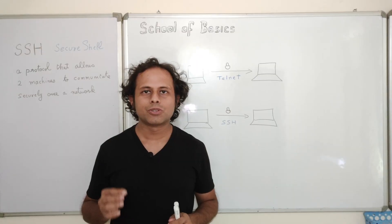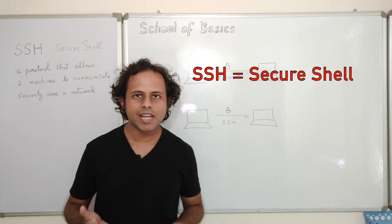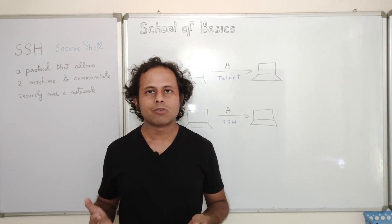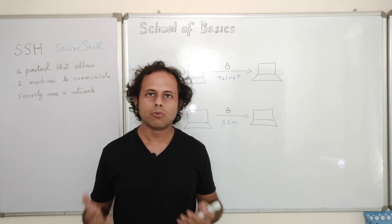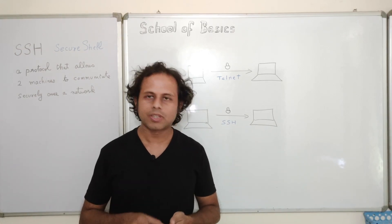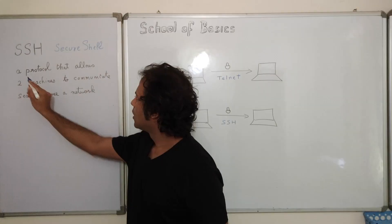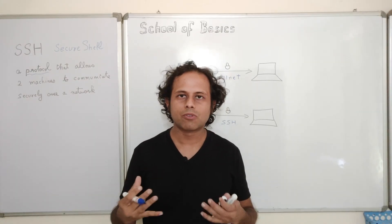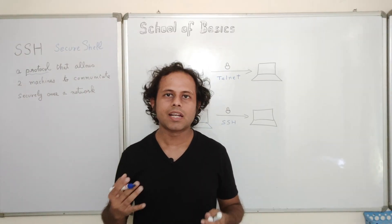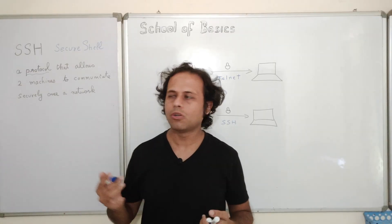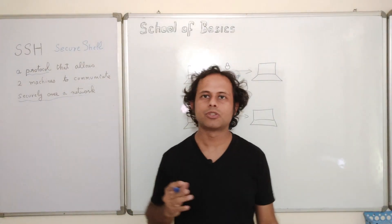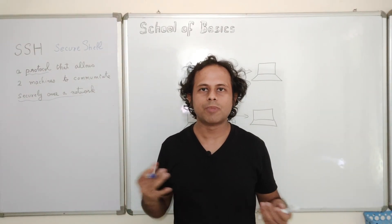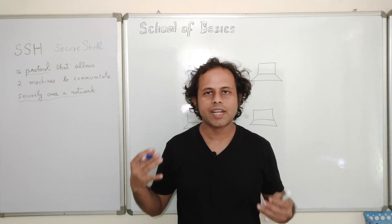SSH is an acronym for Secure Shell. In very simple words, it is a protocol that allows two or more machines to talk to each other over a network in a secure way. There are two important things here: it is a protocol — a set of rules or guidelines — and it allows two machines to talk securely over a network, like the internet.